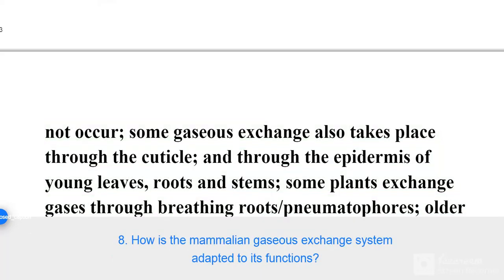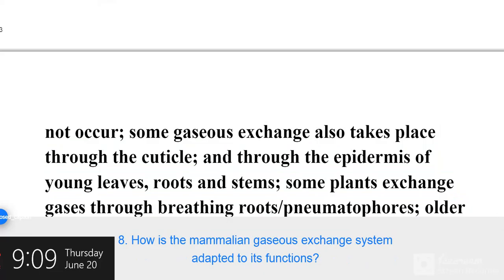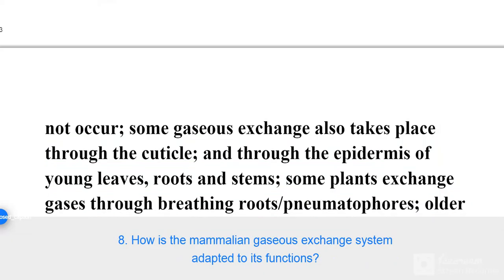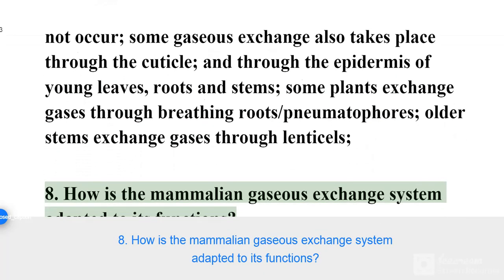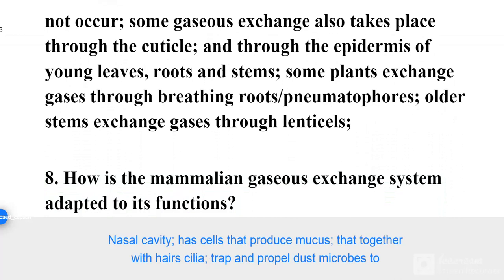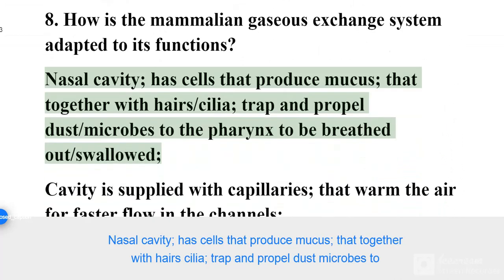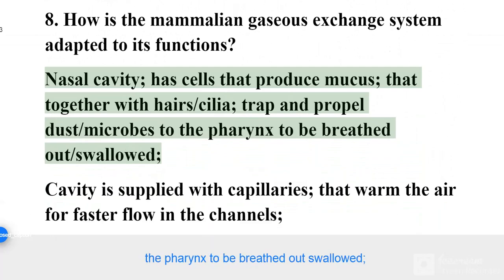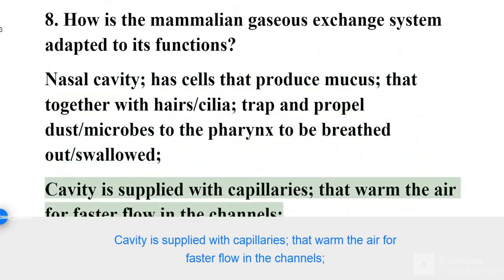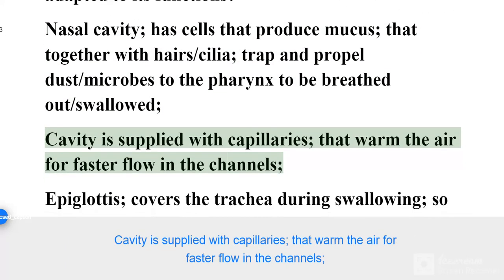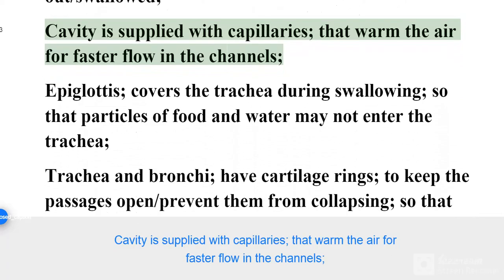How is the mammalian gaseous exchange system adapted to its functions? The nasal cavity has cells that produce mucus that, together with hairs and cilia, trap and propel dust and microbes to the pharynx to be breathed out or swallowed. The cavity is supplied with capillaries that warm the air for faster flow through the channels.